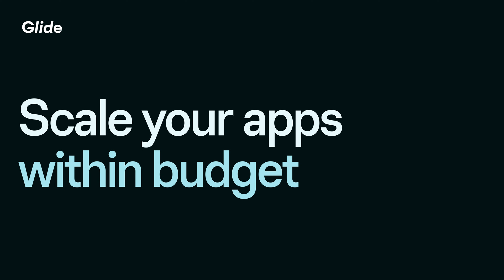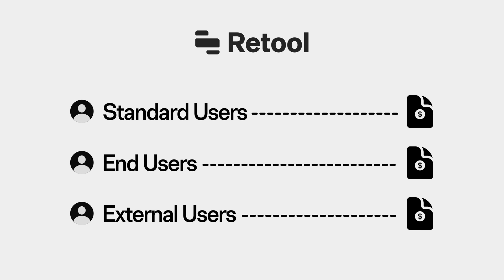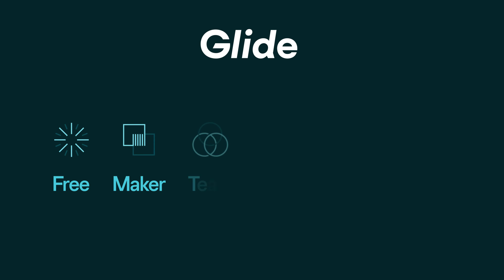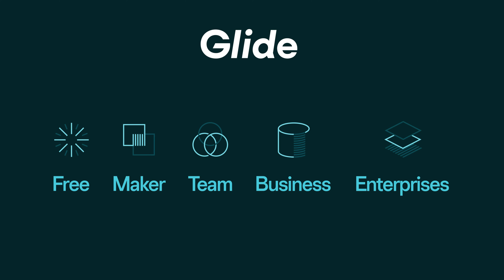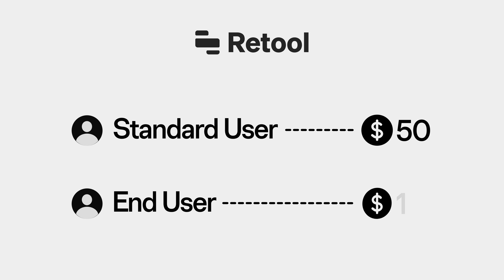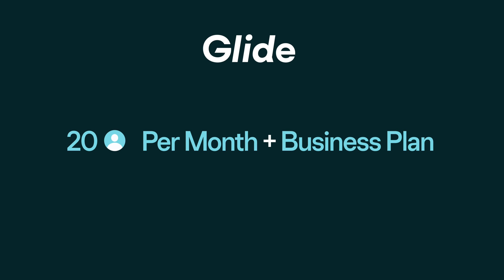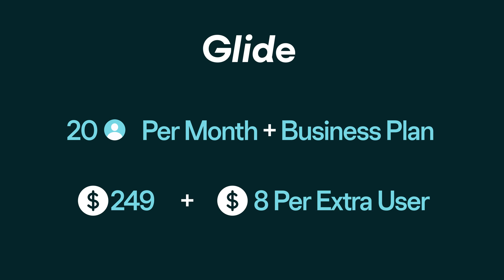Scale your apps within budget. Glide and Retool have scalable usage-based pricing. Retool's pricing involves standard users, end users, and external users, with separate billing for each category. Glide's plans are straightforward with no hidden costs, including a bundle of users with a low additional per-user cost, not categorized by activity or type. With Retool, you pay a fixed price per user: $50 per standard user and $15 per end user on an annual business plan. With Glide, you get 20 active users per month included with an annual business plan at $249 a month, and any additional users will only cost you $8.